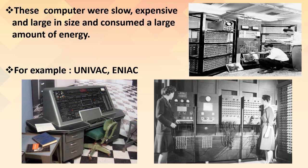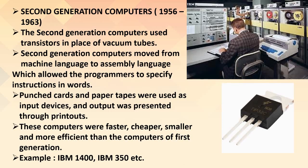Second generation computers: 1956–1963. The second generation computers replaced vacuum tubes with transistors. They moved from machine language to assembly language, which allowed programmers to specify instructions in words. Punch cards and paper tapes were used as input devices and output was presented through printouts. These computers were faster, cheaper, smaller and more efficient than first generation computers. Examples: IBM 1400 and IBM 350.